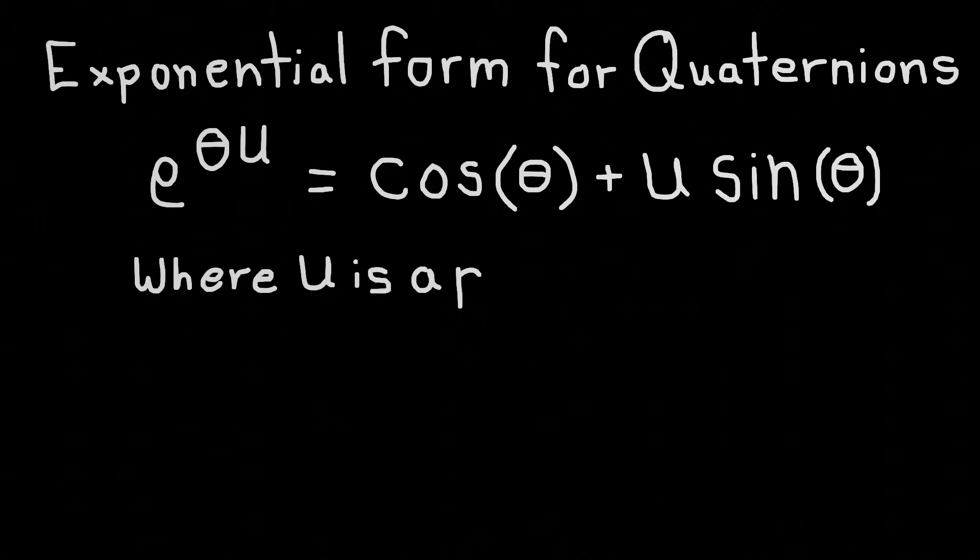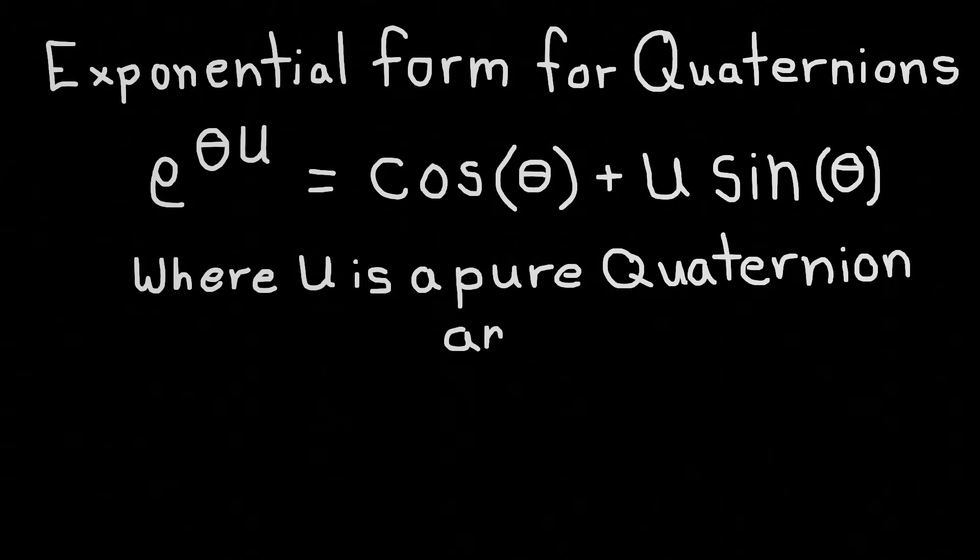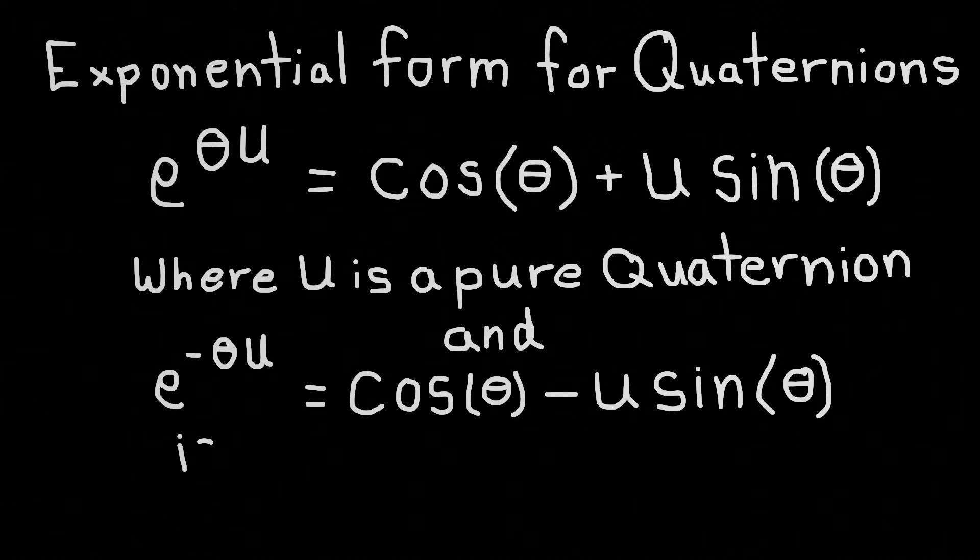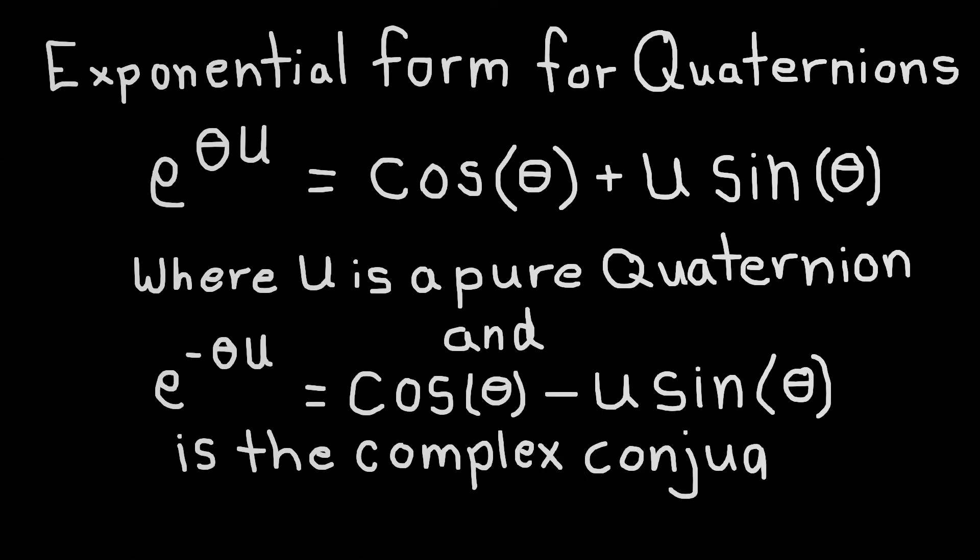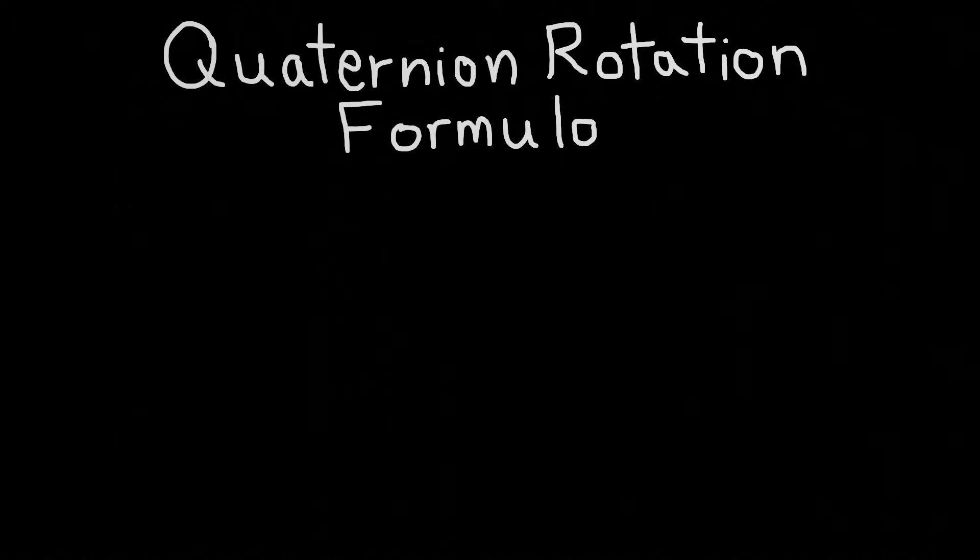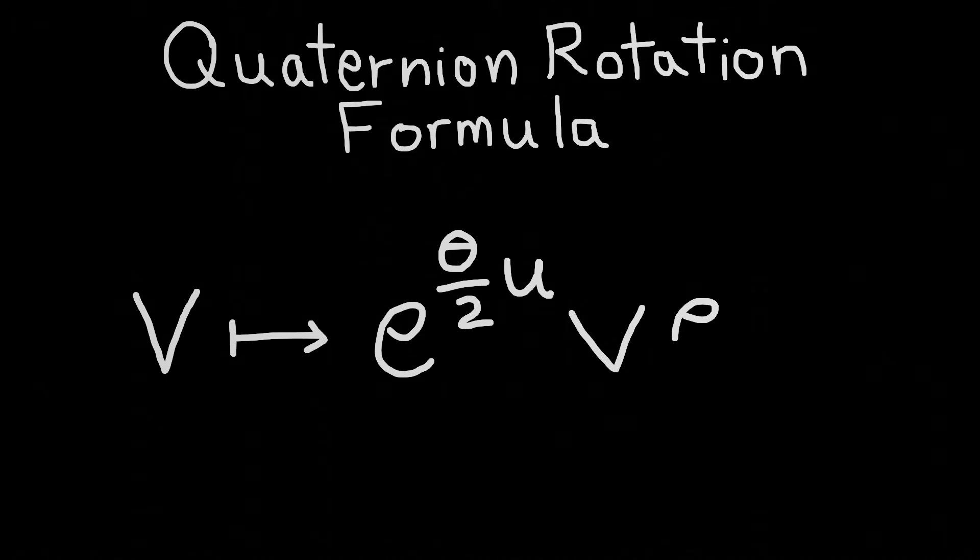e to the theta u equals cosine theta plus u sine theta, in the same way that Euler's formula works for complex numbers. Here, u is a pure unit quaternion, i plus j plus k, and e to the negative theta u is equal to the cosine of theta minus u sine theta, which is the complex conjugate of a quaternion usually denoted q bar or q star. The formula for multiplying quaternions to produce a rotation in three-dimensional space is v goes to e to the theta over two u times v times e to the minus theta over two u. So you can see we sort of go halfway there with the first one and then do the other half with the complex conjugate.